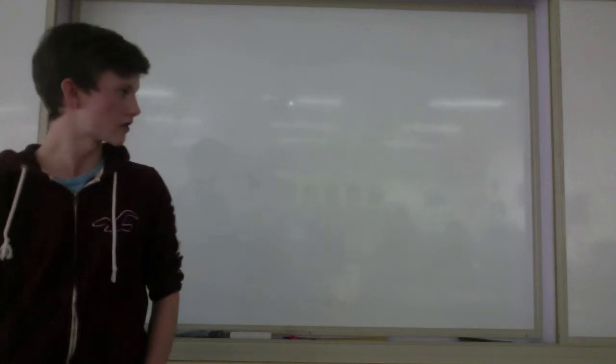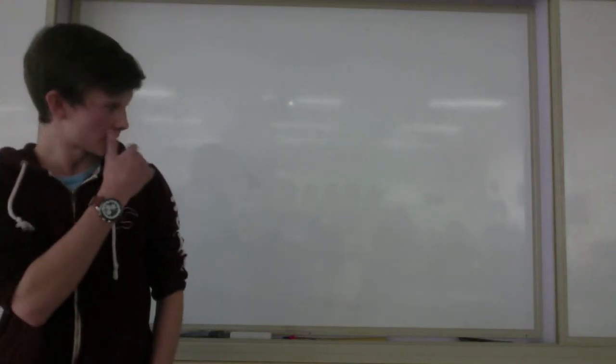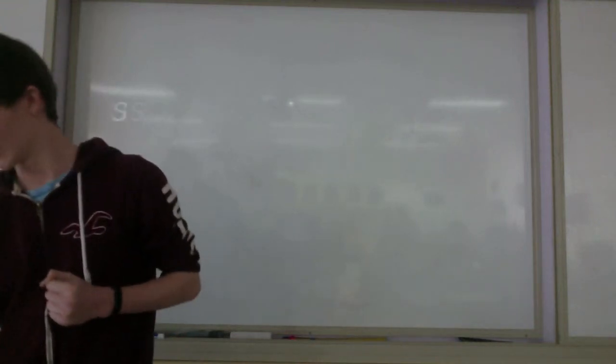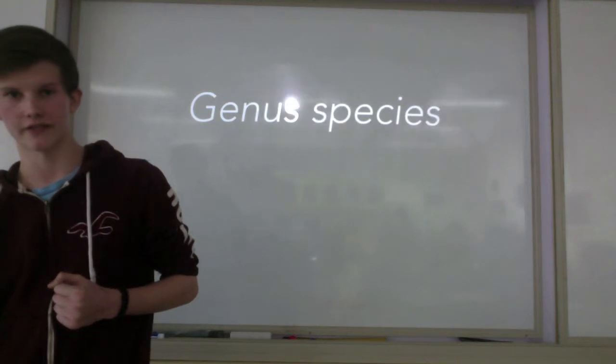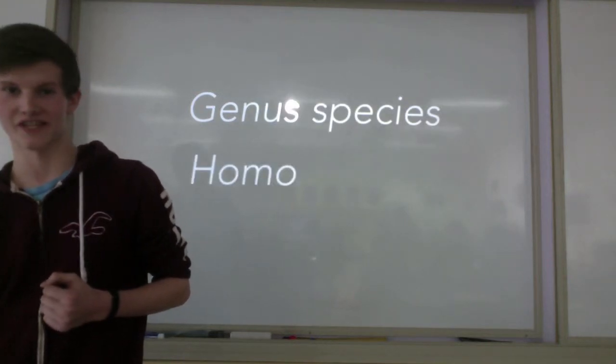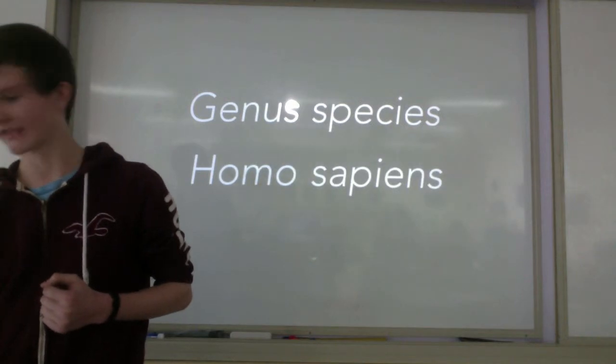Anyways, to classify animals, good old Carl Linnaeus came up with the binomial nomenclature, which consists of the genus and the species written in italics. The genus is capitalized and the species is not capitalized, ever. An example of this is Homo sapiens, which is us.